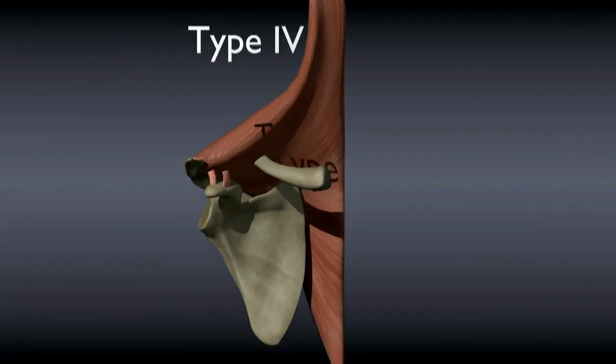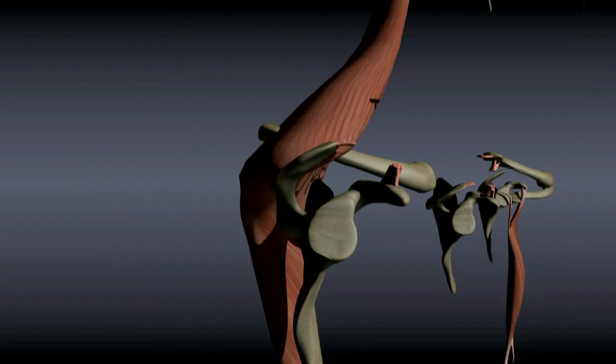Type 4 injuries occur when the clavicle has been torn free from the acromion and displaced backwards. It can be pushed through the trapezius muscle.